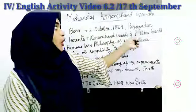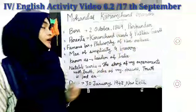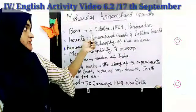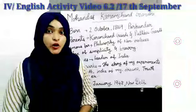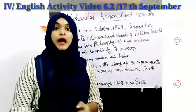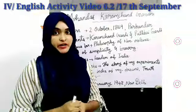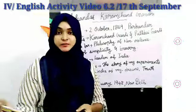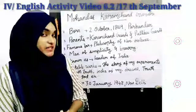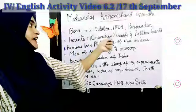The first point: he was born on 2nd October 1869 in Porbandar. Porbandar is the name of the place where he was born. We celebrate 2nd October as Gandhi Jayanti — it's coming next month in October — so make sure to write down this date and place.